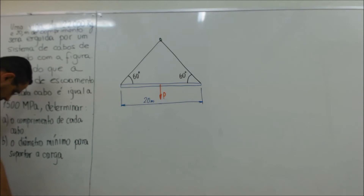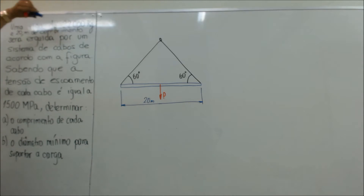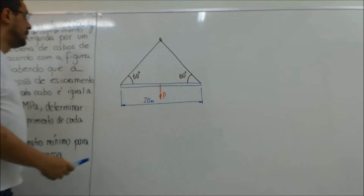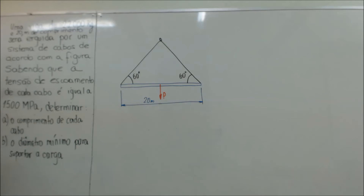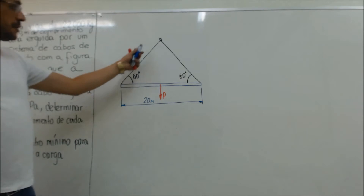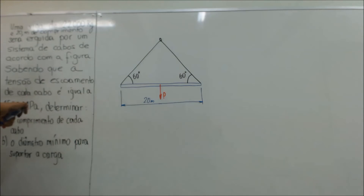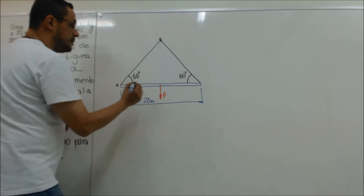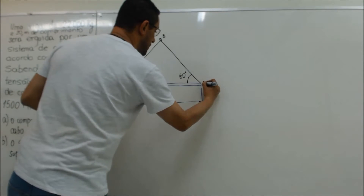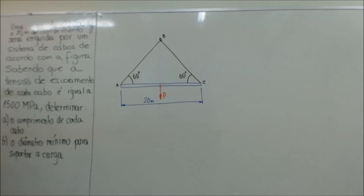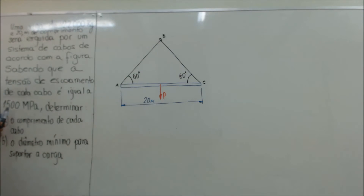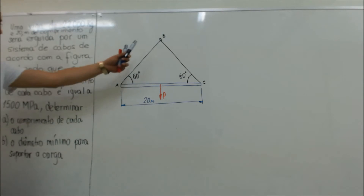Vamos lá! Temos aqui um problema: uma viga de 22 mil quilos com 20 metros de comprimento. Ela vai ser erguida por um sistema de cabos de acordo com essa figura. Então aqui eu tenho os dois cabos — vou chamar de A, B e C. A tensão admissível de cada cabo vale 1.500 MPa. Então eu quero saber qual vai ser o comprimento mínimo de cada cabo.